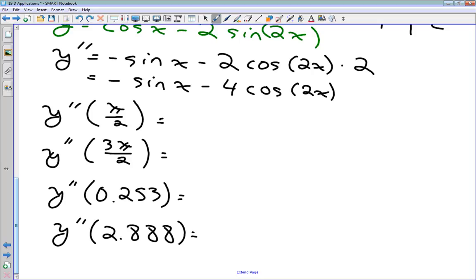And then this is just calculator work here. So I get a value of 5, a value of 3, negative 3.2, and negative 3.2.